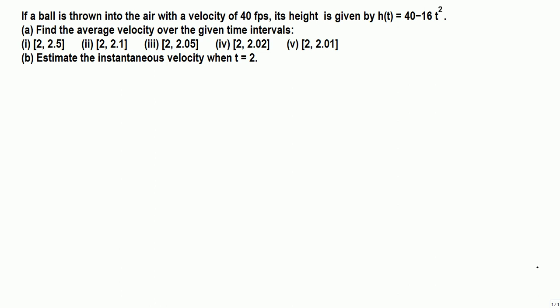If a ball is thrown into the air with a velocity of 40 feet per second, its height is given by this function: 40T minus 16T squared. Find the average velocity over the given time intervals.